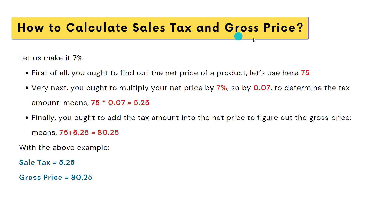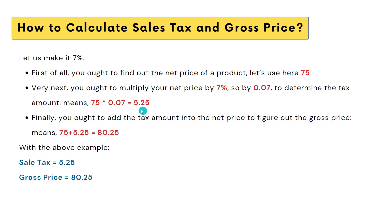For calculating the sales tax and gross price, first we need the tax rate implemented by the country — let's say seven percent. Then we need the price of the product, which is 75 in this example. We multiply the seven percent by the product price to get the sales tax, and then add it to the original price of 75 to get the entire price you will be paying while buying.